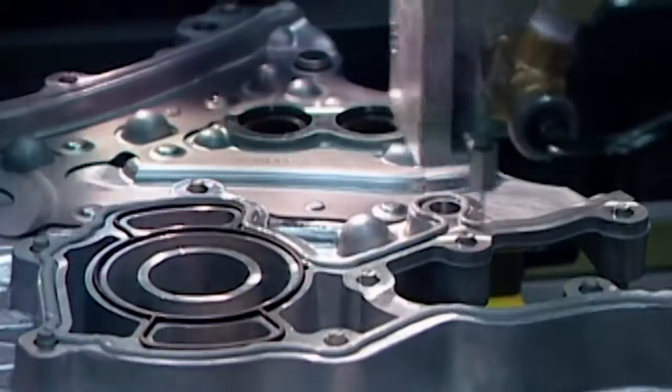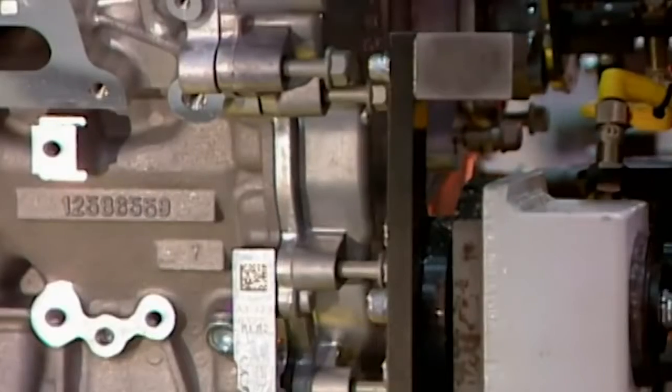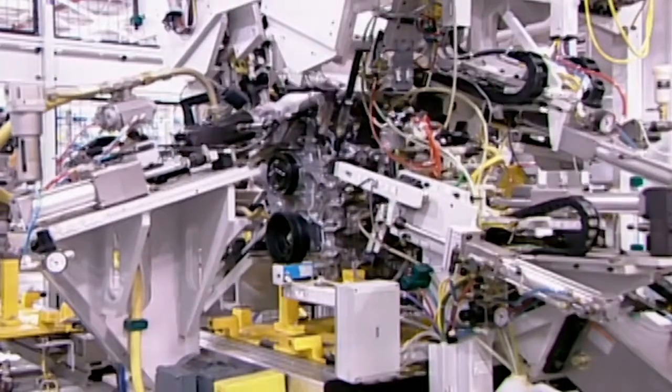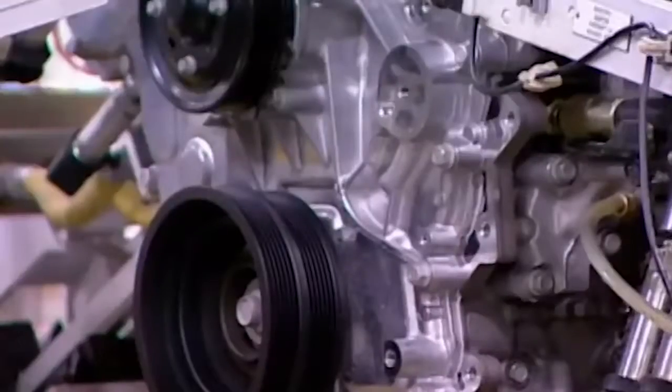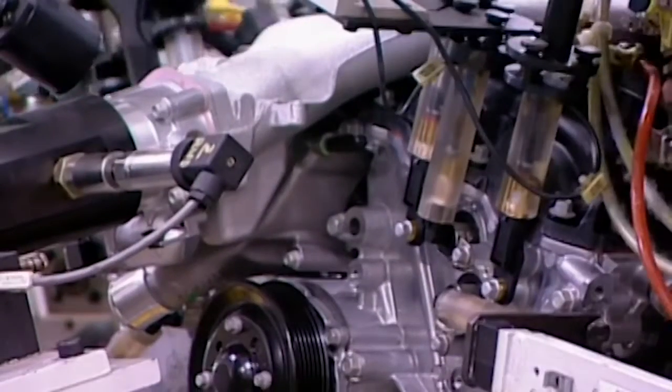A robot applies sealant and then bolts a cover onto the front of the engine block over a component called the timing chain. This chain connects the crankshaft to the camshafts so they rotate in unison, ensuring the valves open when the pistons are in the right position.